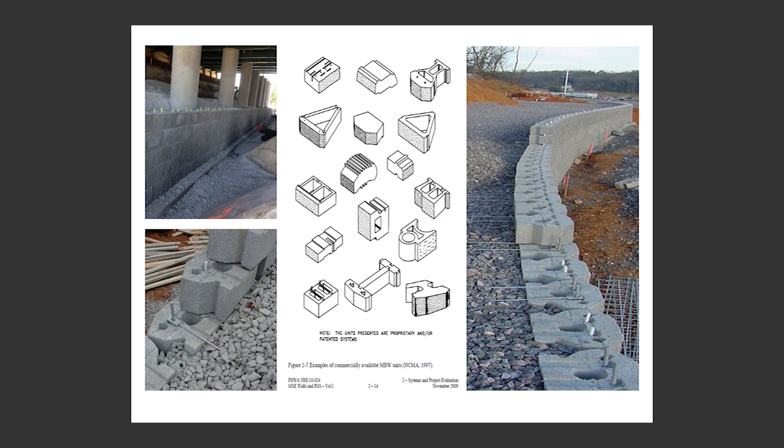Modular block is typically cast without reinforcement as a solid block or with hollow cores and typically has a rough textured finish. Modular block is held to its own set of acceptance and verification testing and will be the focus of parts two and three of our materials minute series on MSE modular block walls. That's all for this materials minute. Stay tuned for part two of this series coming soon.